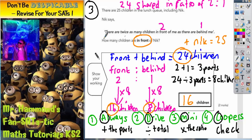A quick check of the original sentence: there are twice as many children in front as there are behind. Does this fit in? 16 in front, eight behind. Is 16 twice as many as eight? Yes it is. So everything seems to fit in quite nicely.